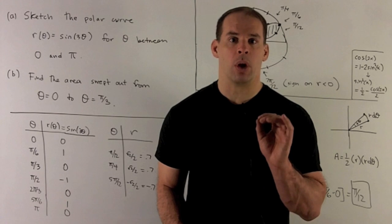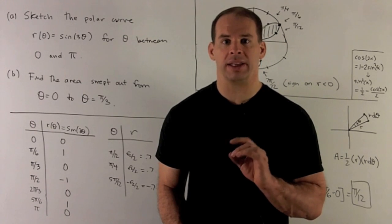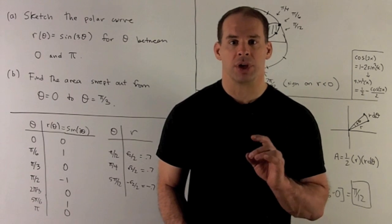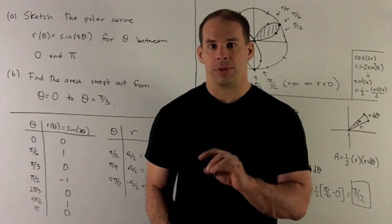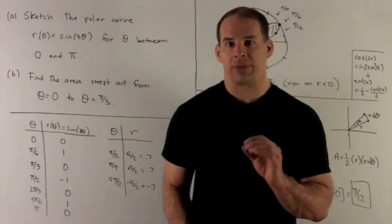First, we want to sketch a polar curve. So here I have a polar function r(θ) = sin(3θ). We put an angle θ in, a radius comes out. How do we plot those points?